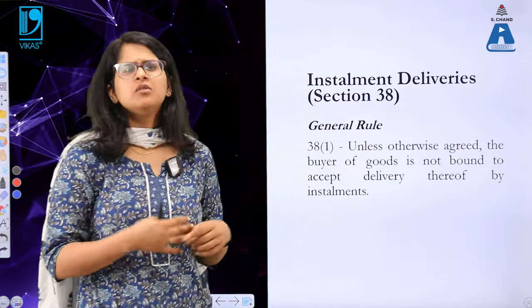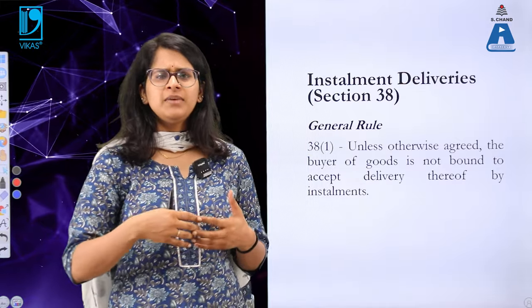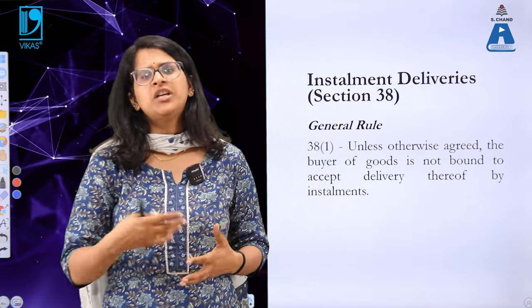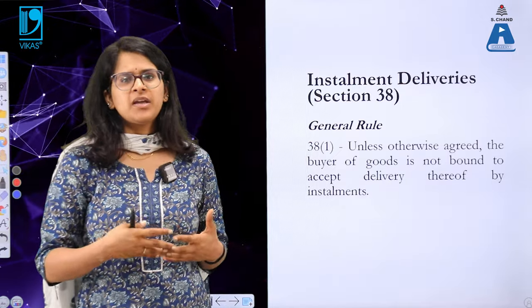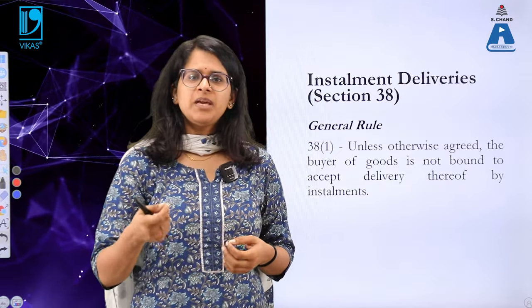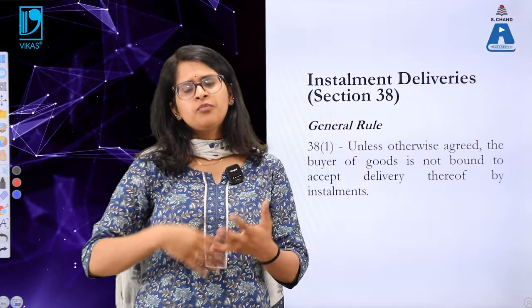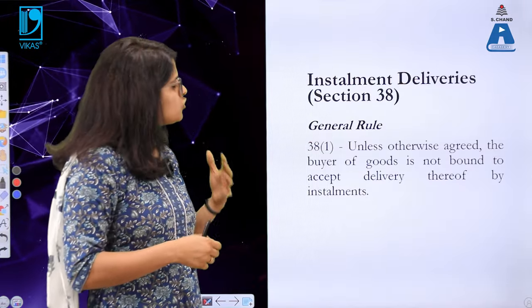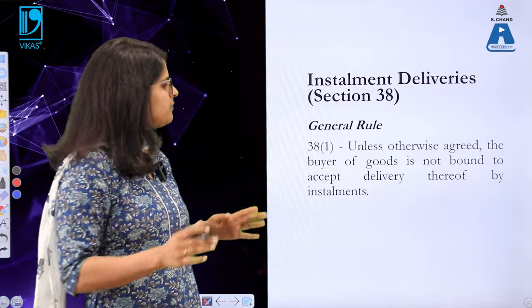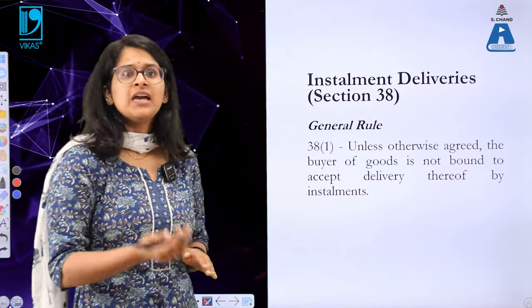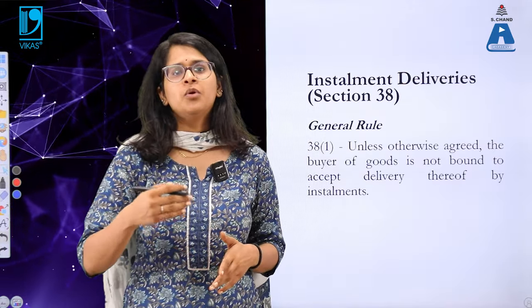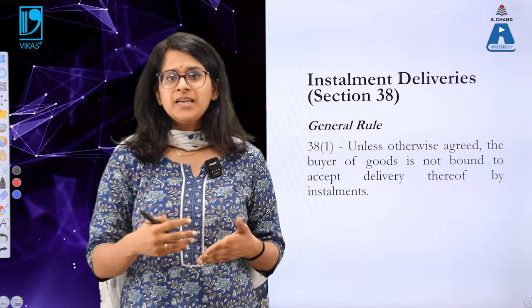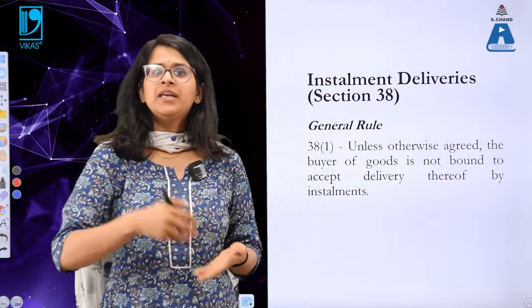Now, installment deliveries. An installment means delivering or paying in parts of a periodic nature — similar to EMIs (easy monthly installments). The general rule under Section 38 is that unless otherwise agreed, the buyer of goods is not bound to accept delivery by installments. So if you want to deliver by installments as a seller, you must mention it specifically in your contract; otherwise, the buyer is not bound to accept such delivery and can reject it.